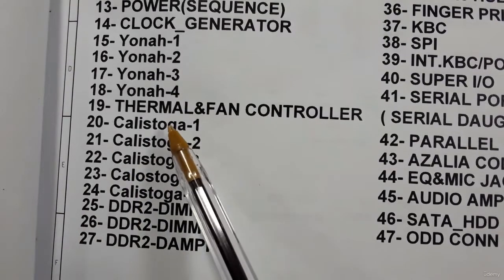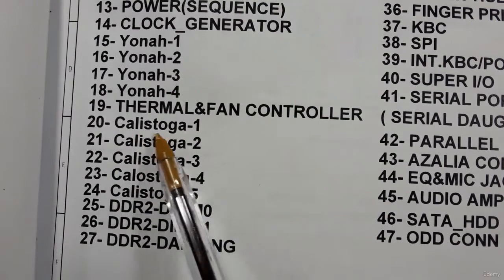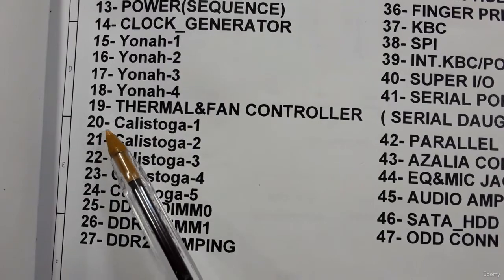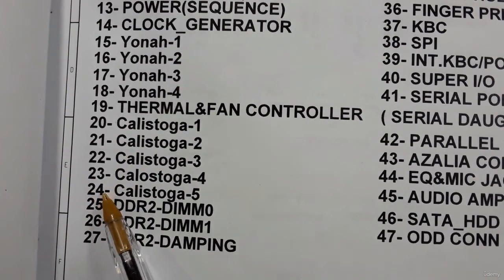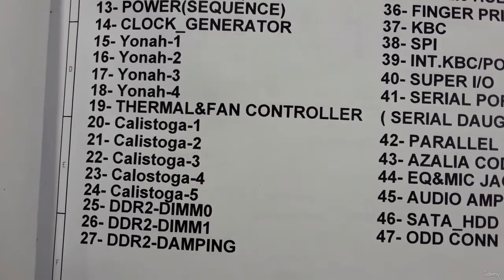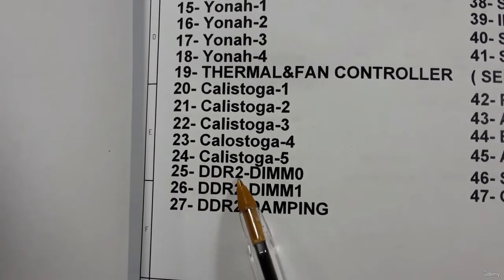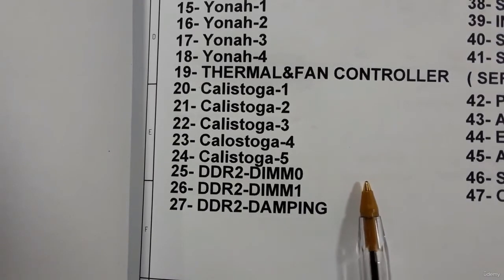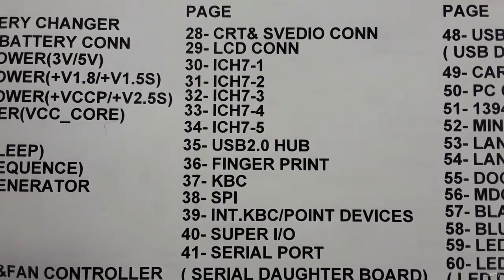In four pages — pages 20, 21, 22, 23, and 24 — we have the Calistoga, which is the name of the GMCH. Then in three pages we have the DDR2 memory circuit.